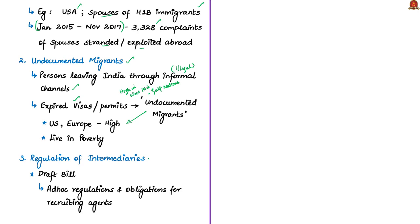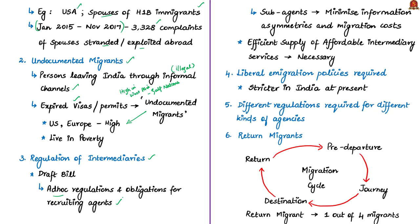Next, the authors discuss the regulation of intermediaries. The draft bill has incorporated many already established ad hoc regulations and obligations for recruiting agents. It has also included sub-agents — often a relative or friend of the potential immigrant — and student enrollment agencies into its regulatory authority. The authors tell that these intermediaries play an instrumental role in minimizing information asymmetries and migration costs.